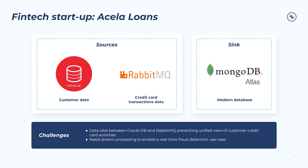However, they face a couple of challenges. First, the customer and transactions data they need live in two separate systems — Oracle and RabbitMQ — and they'll need to access and merge the data in order to get a unified view of their customers' credit card activities. Second, they'll need stream processing in order to build a real-time application for fraud detection. Using Confluent, we can build and scale real-time hybrid and multi-cloud data pipelines that move data from any source environment to the cloud database of your choice.